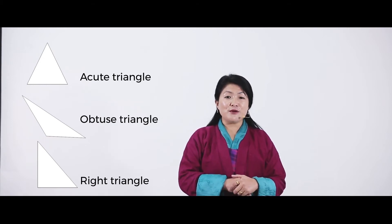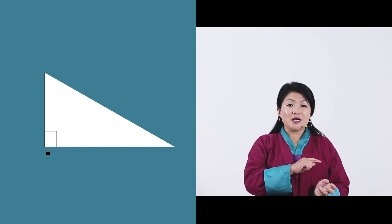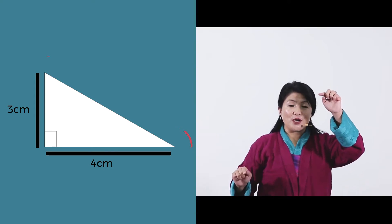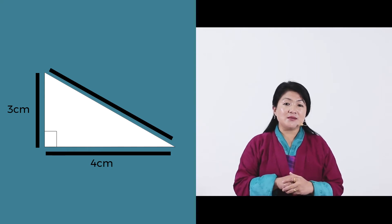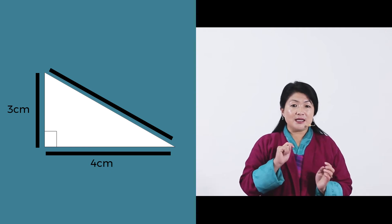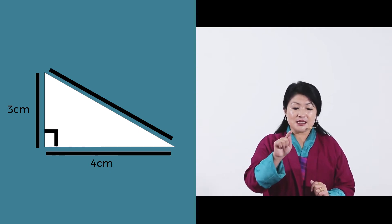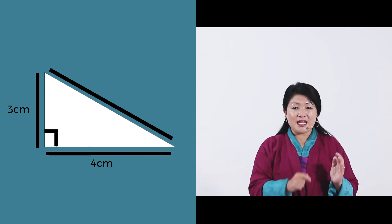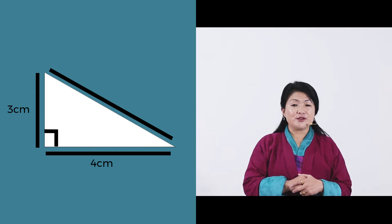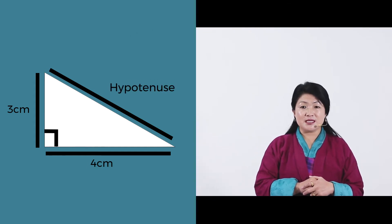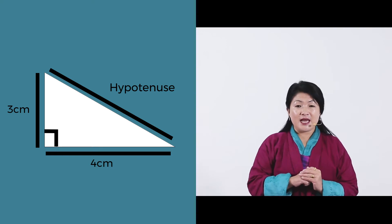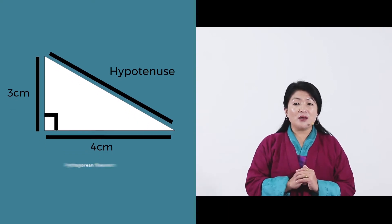Of these three triangles, today we are going to look at the Right Triangle. I have a right triangle here whose side lengths are 4 cm and 3 cm. To make the triangle, we join these two points by drawing a diagonal line. The angle here is 90 degrees, and the line opposite to the 90-degree angle is the longest line of the triangle — that is known as the hypotenuse. The hypotenuse has a special relationship with the two other sides.